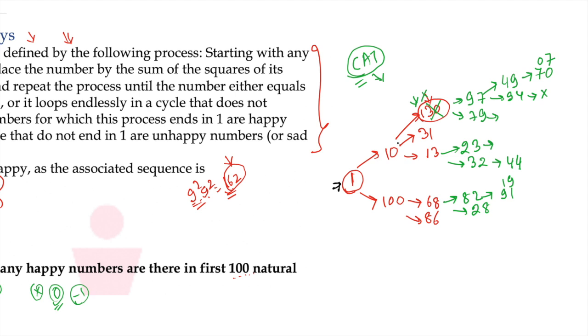We have 1. We have 2. We have 3, 4, 5, 6, 7. No counting. 8, 9, 10, 11, 12, 13, 14, 15, 16, 17, 18, 19, 20. So we have 20 happy numbers up to 100. And this one is a manual counting.